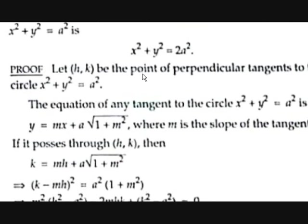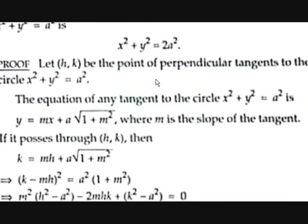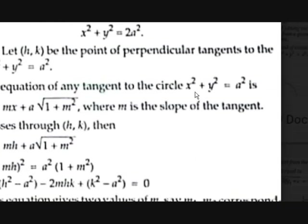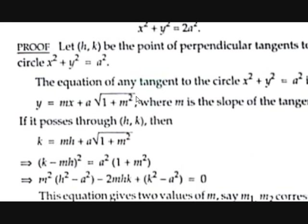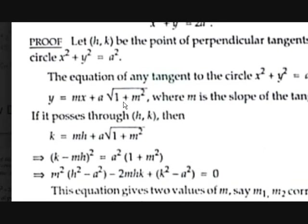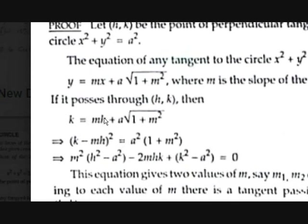To prove this, let (h, k) be the point of intersection of perpendicular tangents to the circle x²+y²=a². The equation of any tangent to x²+y²=a² is y = mx ± a√(1+m²). Since it passes through (h, k): k = mh + a√(1+m²).